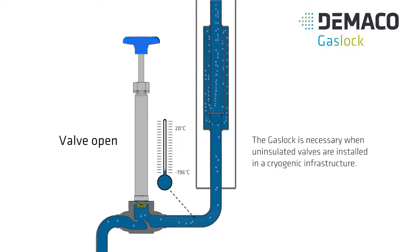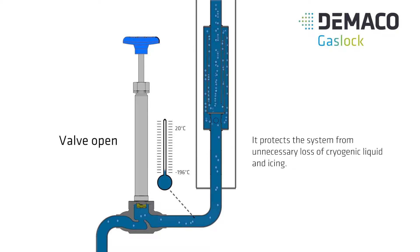The gas lock is necessary when uninsulated valves are installed in a cryogenic infrastructure. It protects the system from unnecessary loss of cryogenic liquid and icing.